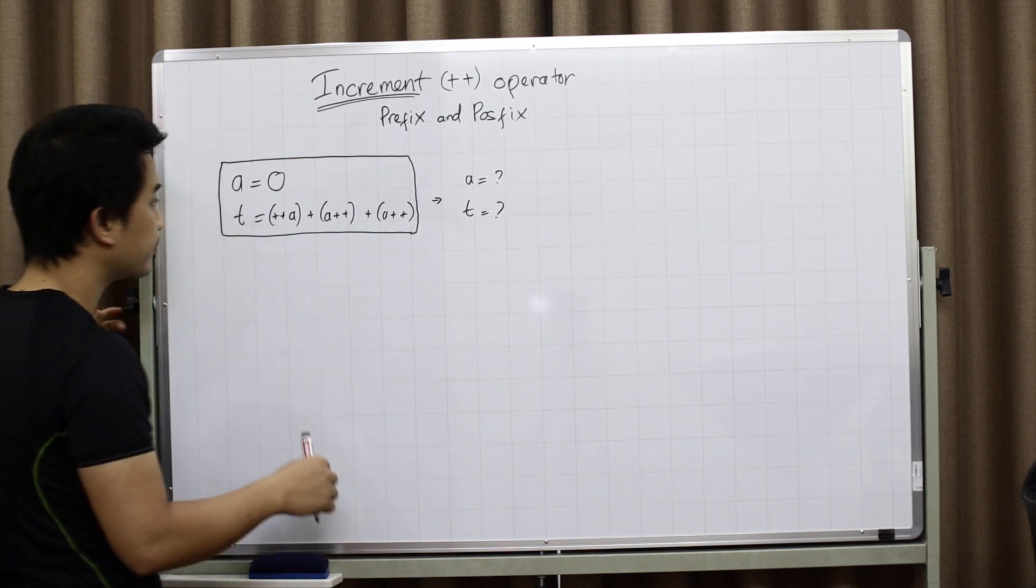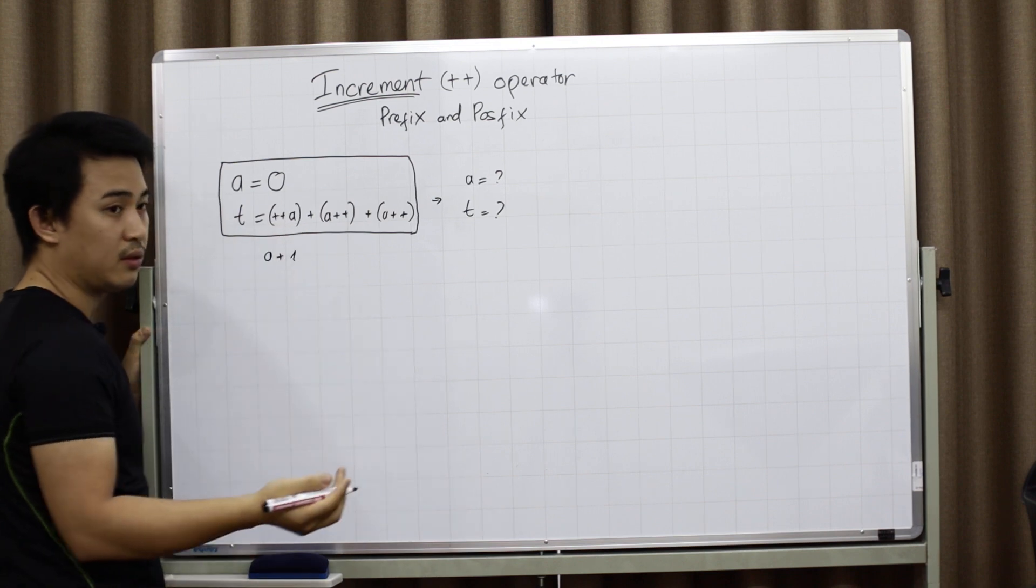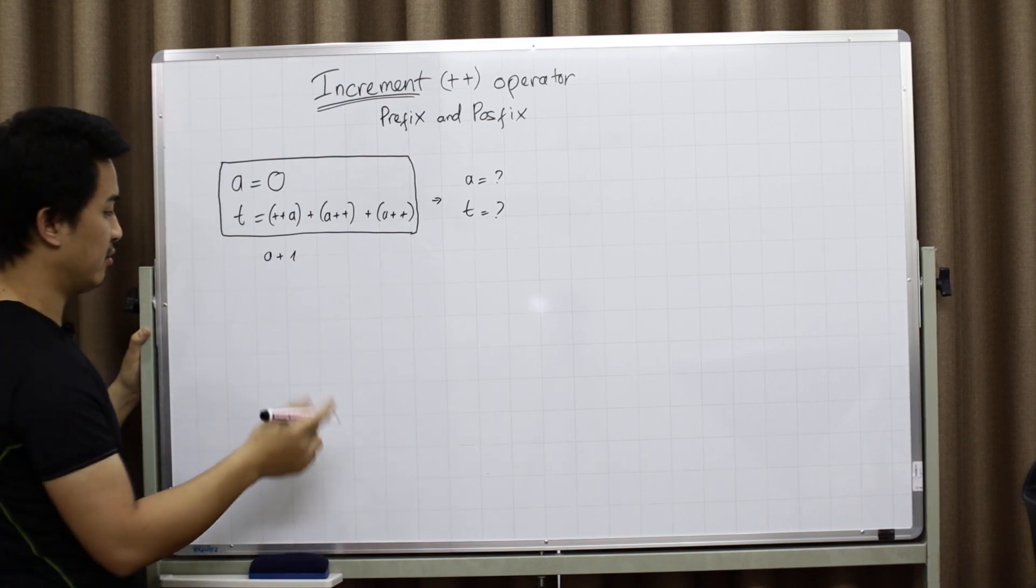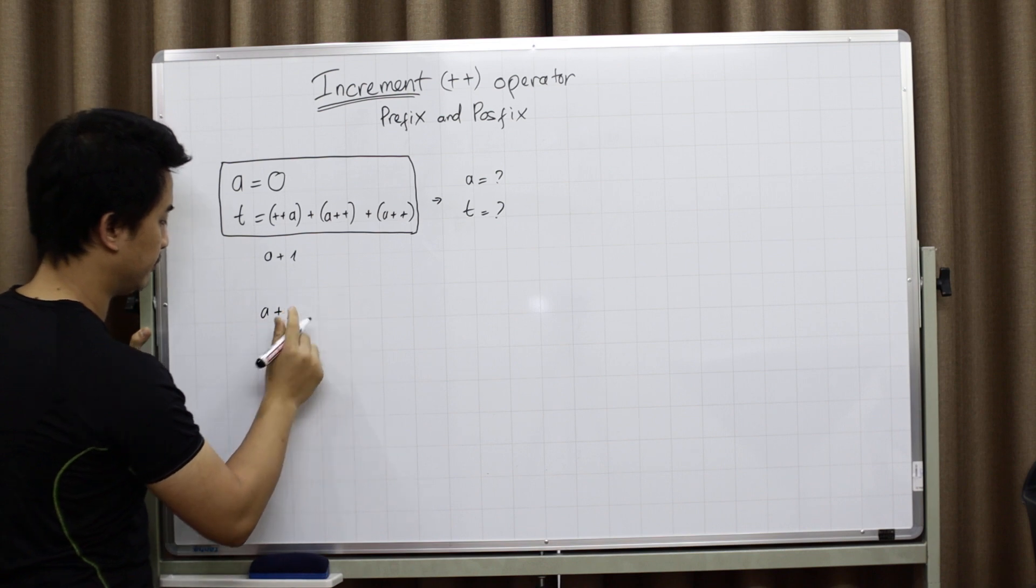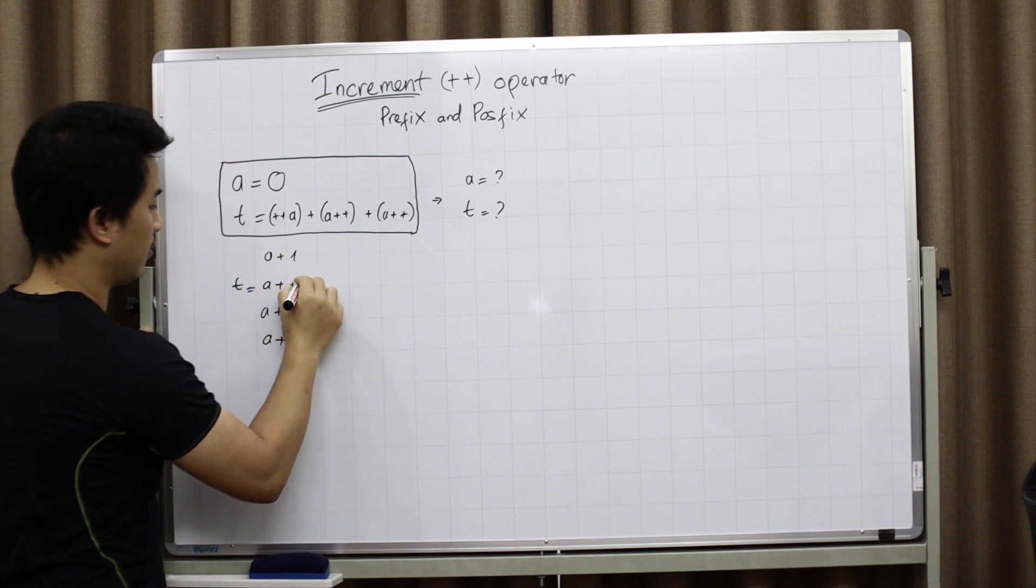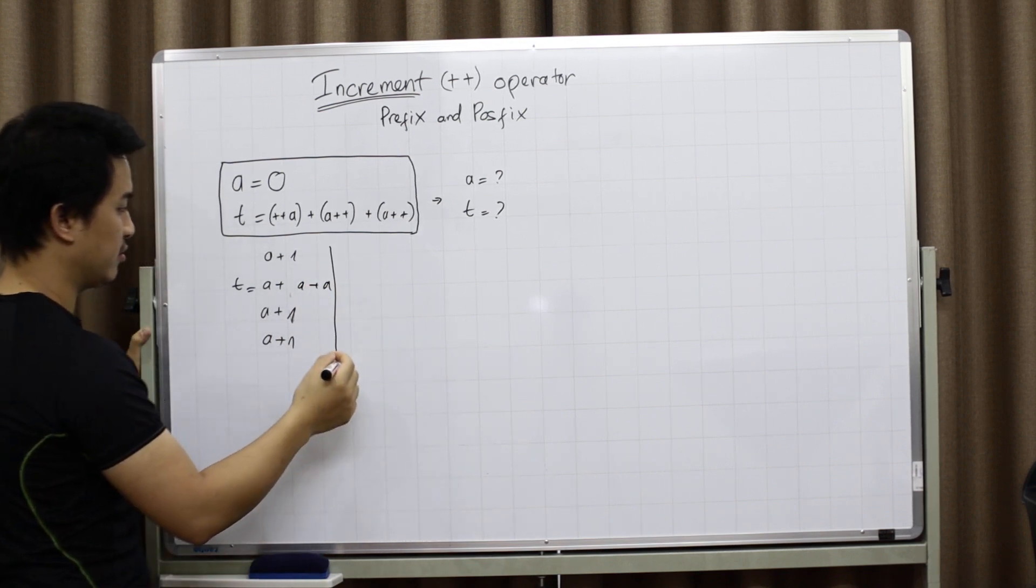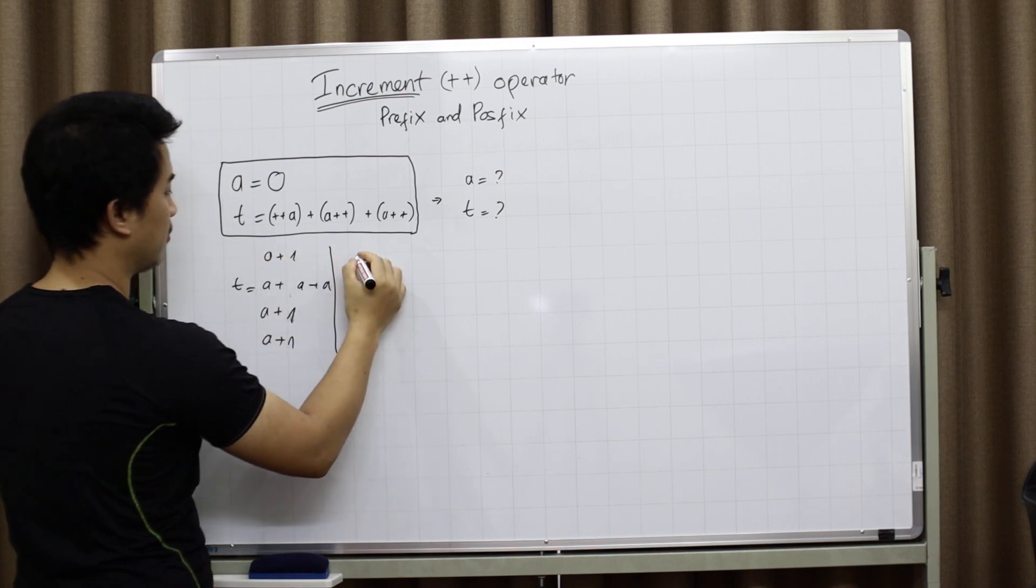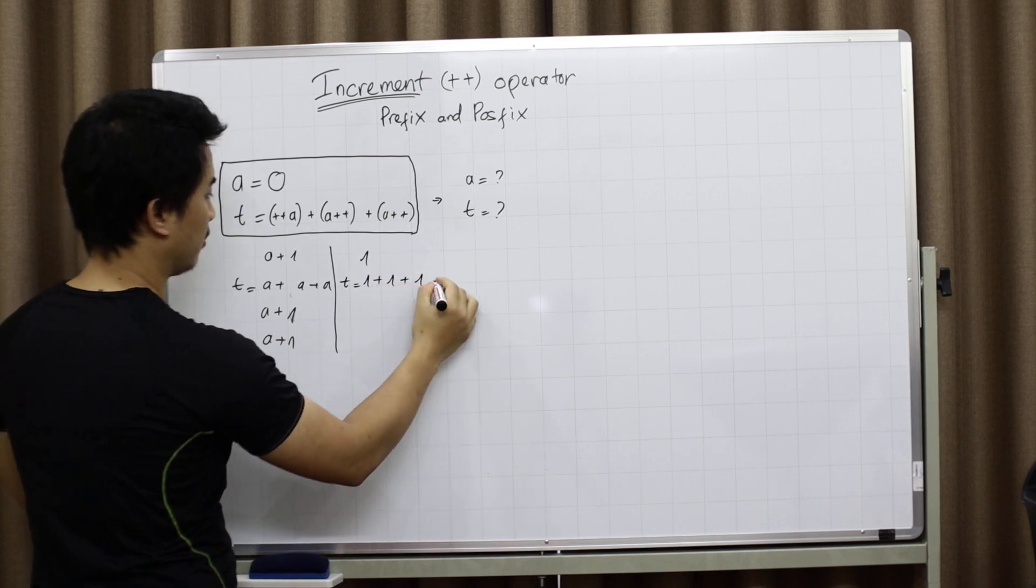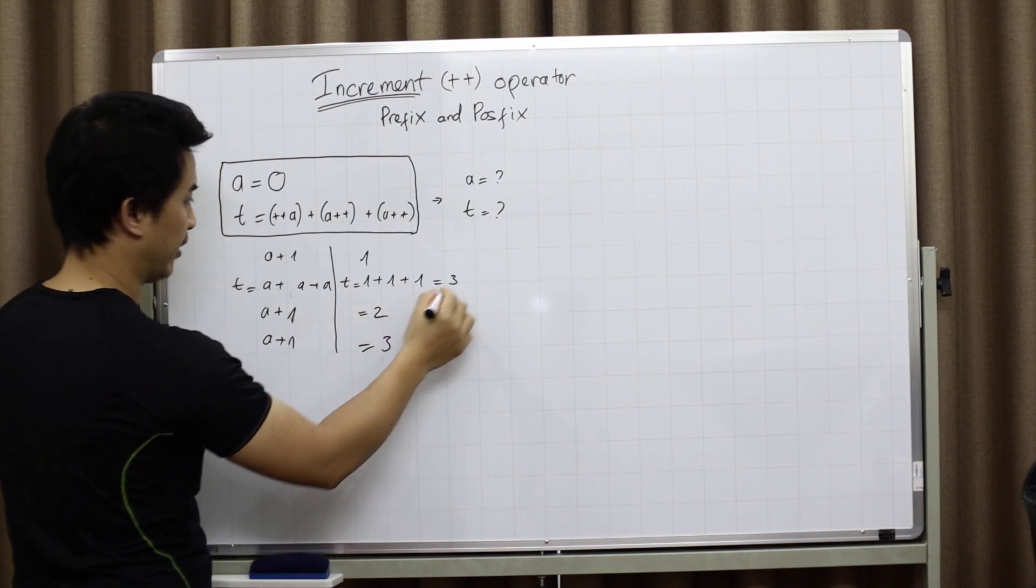And two are the postfix operator so I will do it later. And the expression will be like this, so it makes my calculation are a plus one equal one, and t equal one plus one plus one and this is three, a plus one equal two, a plus one equal three. So my result is t equals three and a equals three.